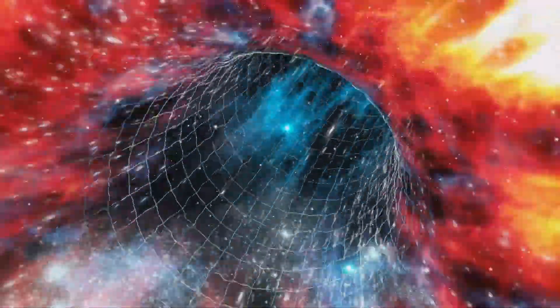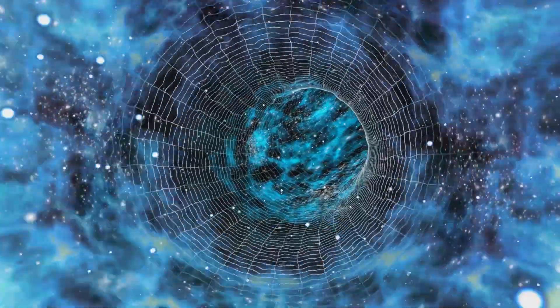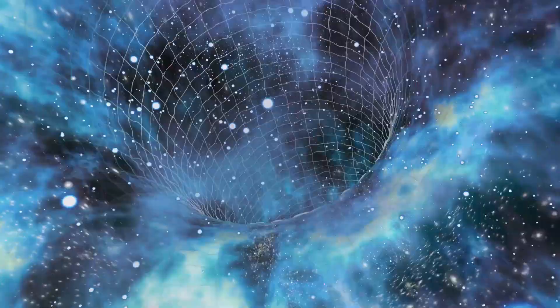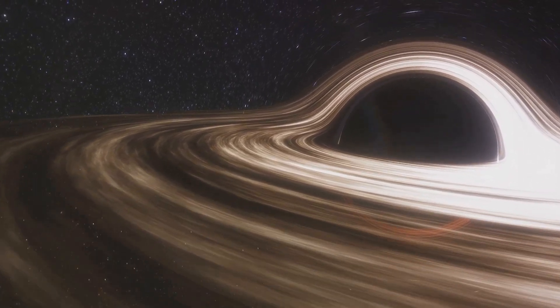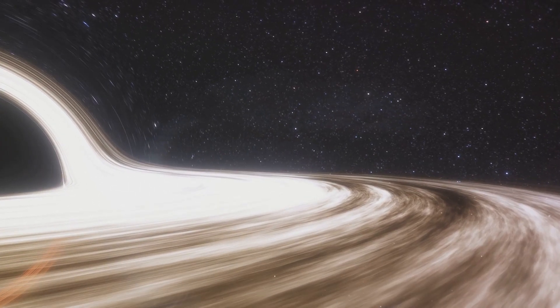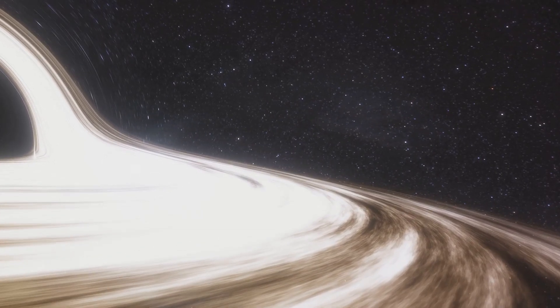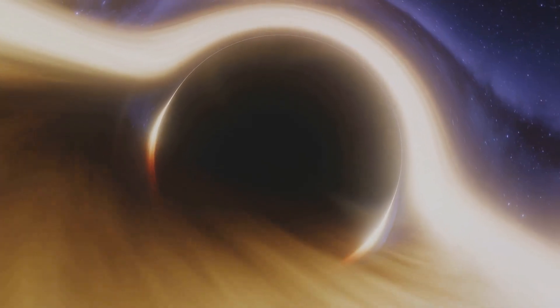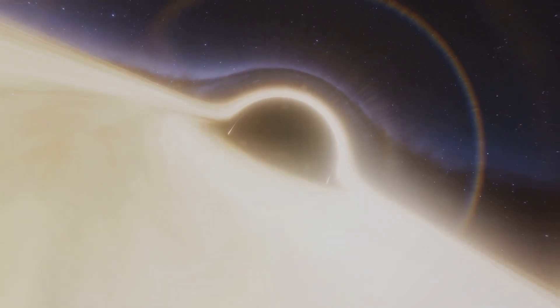But where does time fit into this picture? Well, it comes in when we consider the space in space-time. We live in a four-dimensional universe with three dimensions of space, length, width, and height, and one of time. These aren't separate but interconnected. When a massive object warps space-time, it's not just affecting how things move through space but also how they move through time. Einstein's equations showed that the presence of mass and energy distorts space-time, and the greater the mass or energy, the greater the distortion. This distortion affects both spatial and temporal dimensions. When space-time is curved by a massive object, time itself slows down. This isn't just an abstract concept, but something we can measure. Clocks closer to a massive object actually tick slower compared to those further away.